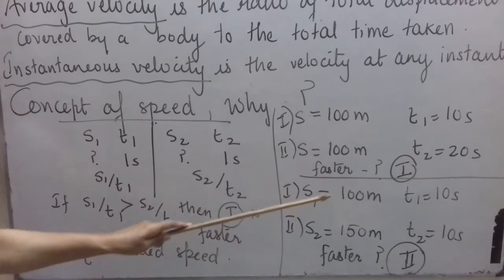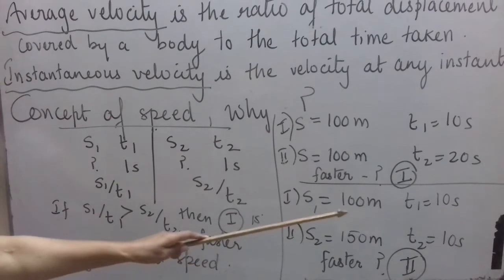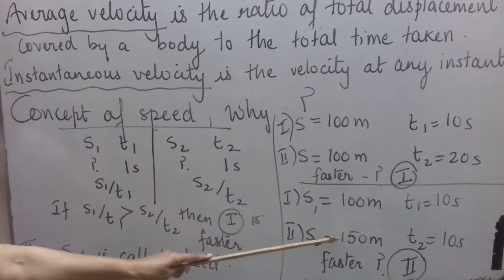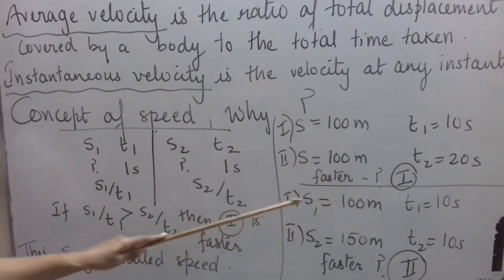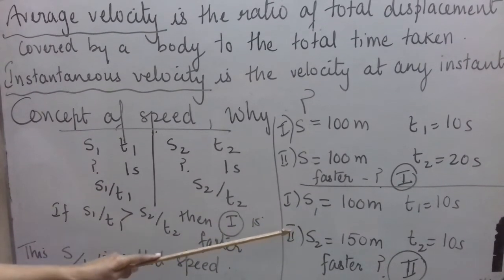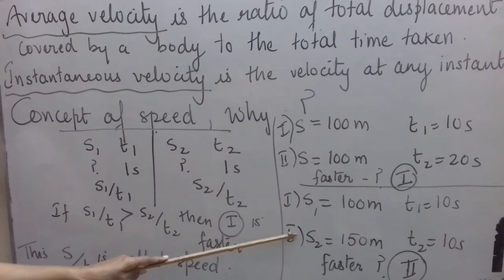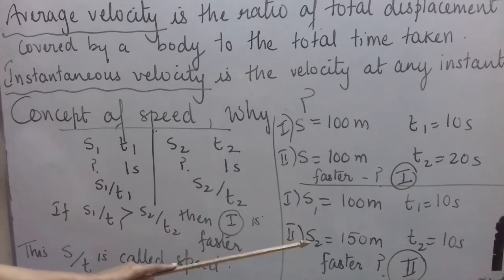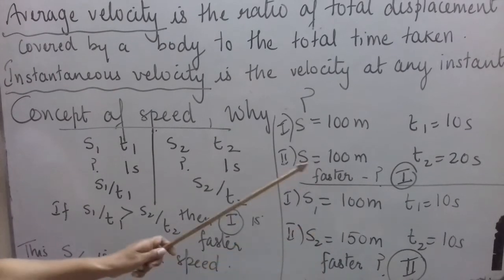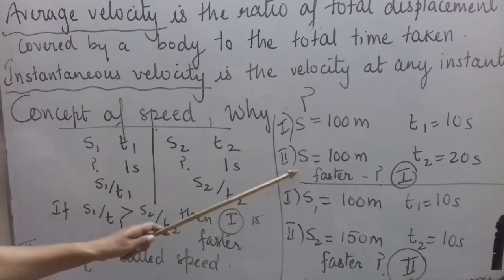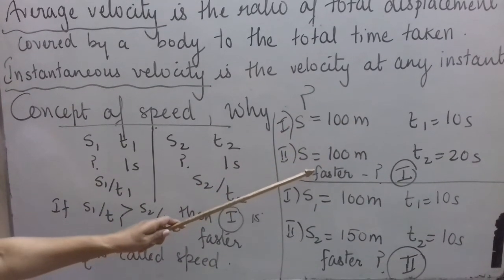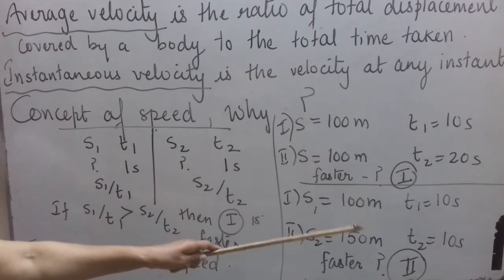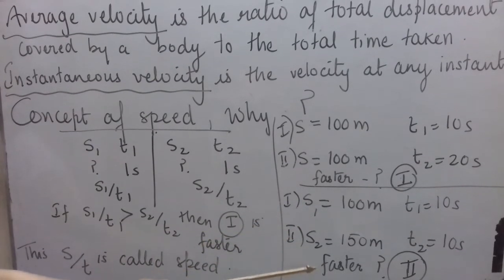Now consider a second case where persons have to run for 10 seconds. The first person travels 100 meters in 10 seconds and the second person travels 150 meters in 10 seconds. Here the time is fixed, so the person who covers more distance is faster. We can say the second person is faster. So to determine who is faster or slower, when distance is the same we compare time; when time is the same we compare distance.